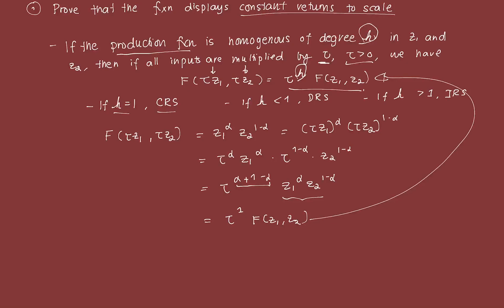H in this case is 1. Since H, the degree of homogeneity, equals 1, the function displays constant returns to scale — meaning if you double the inputs, the output will also double. So that's question 1 answered.